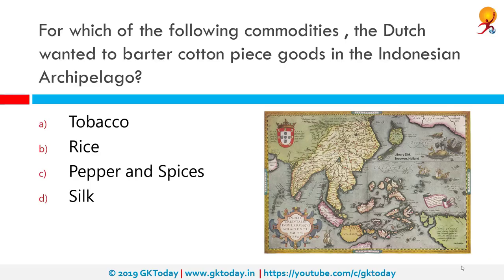For which commodities did the Dutch want to barter cotton-piece goods in the Indonesian archipelago? The correct answer is pepper and spices. Recognizing the potential of the East India spice trade and to prevent competition eating into Dutch profits, the Dutch government amalgamated the competing merchant companies into a single company to perform these trades.